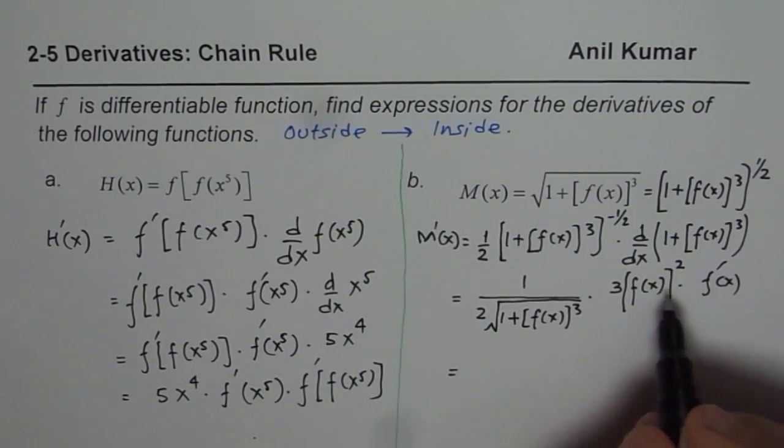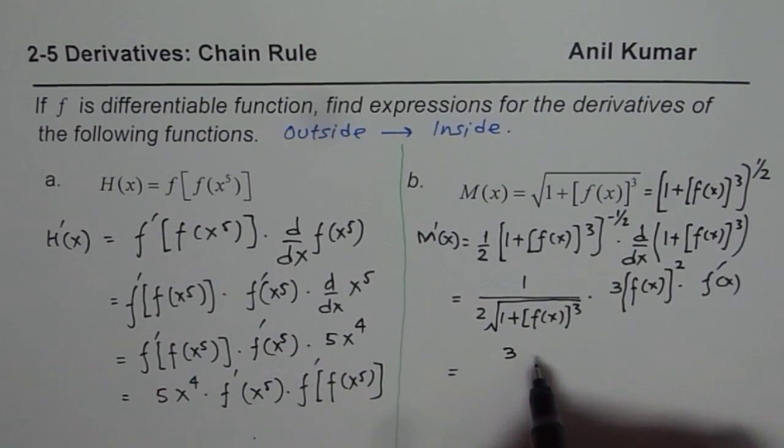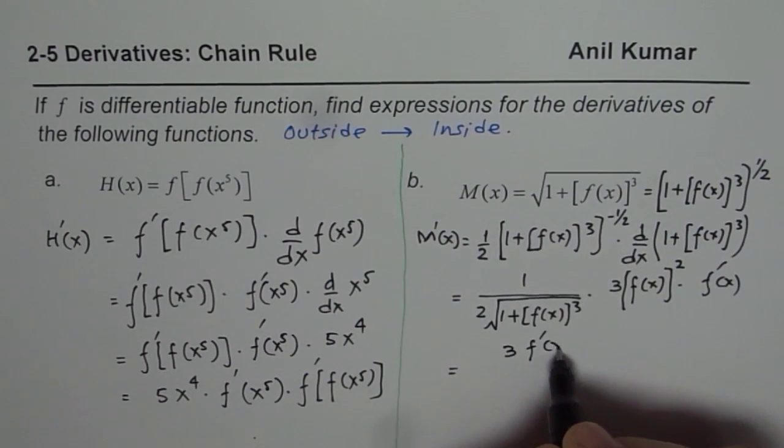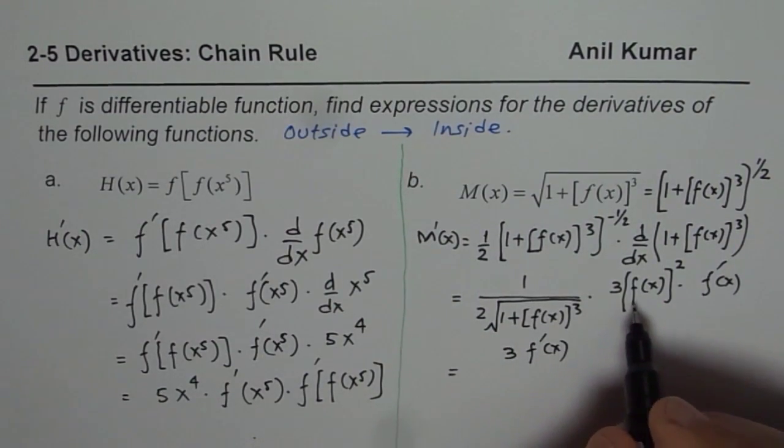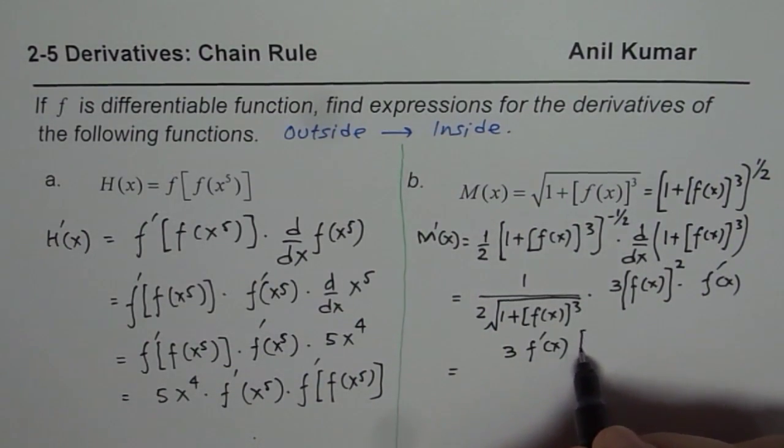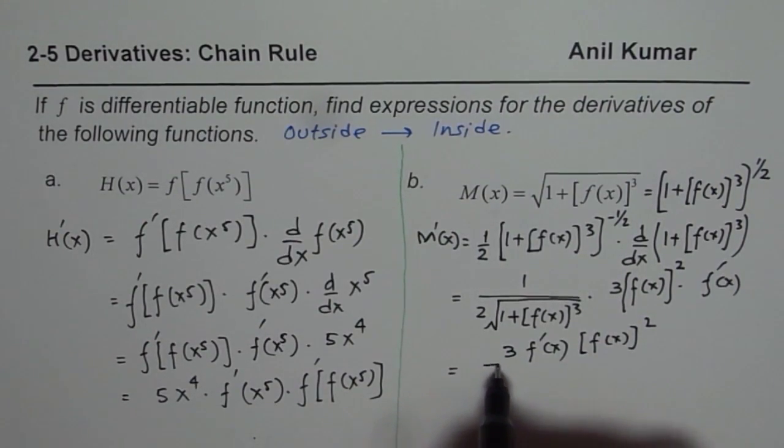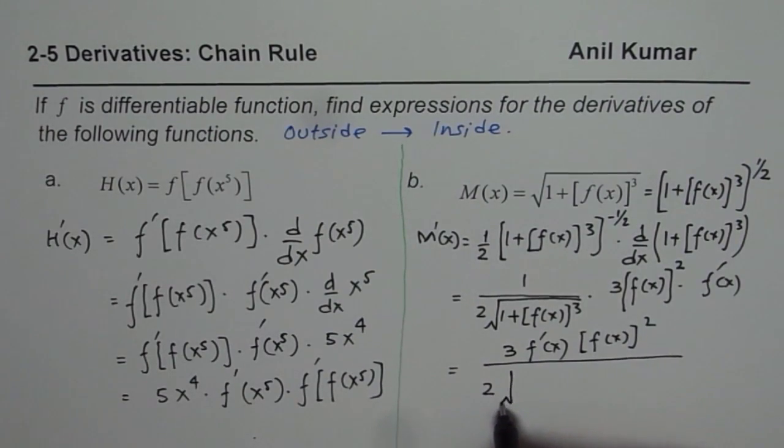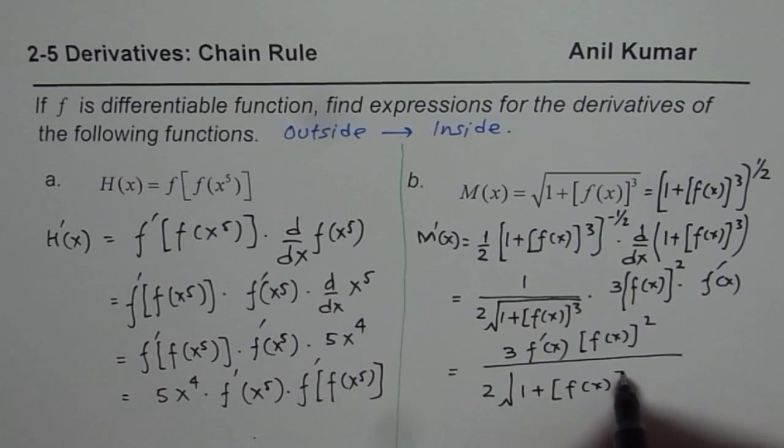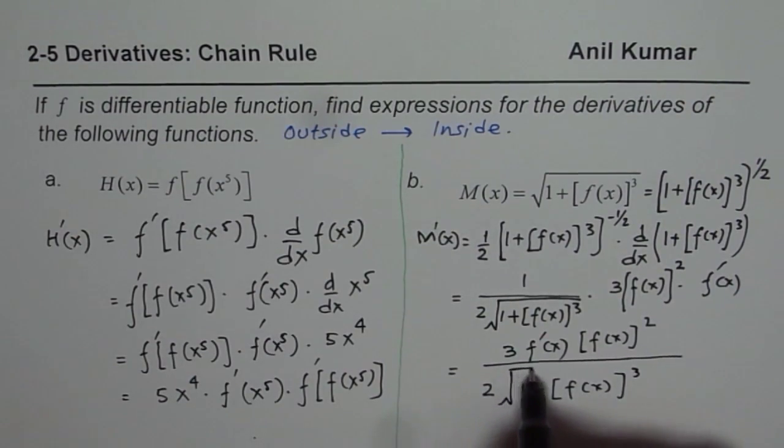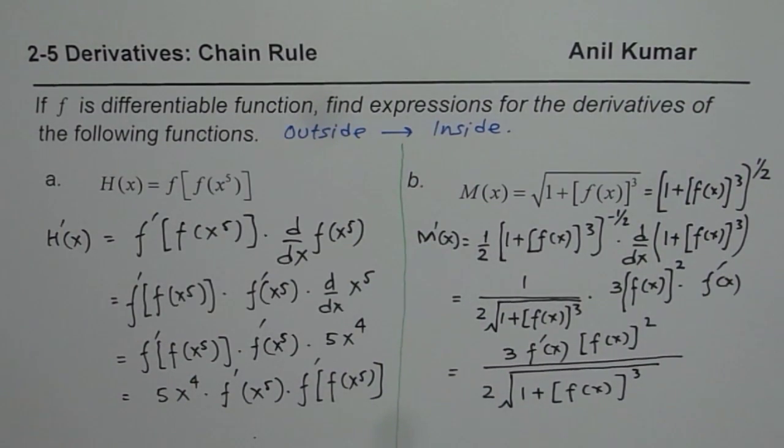You could now write this as 3f'(x)[f(x)]² divided by 2√(1 + [f(x)]³). That is how you get the derivative of such functions.